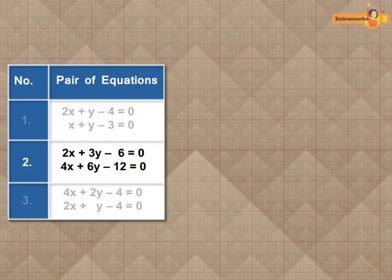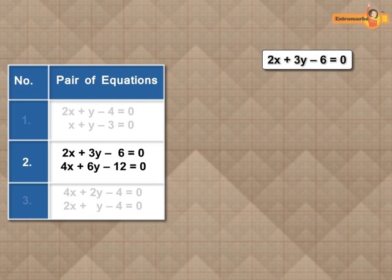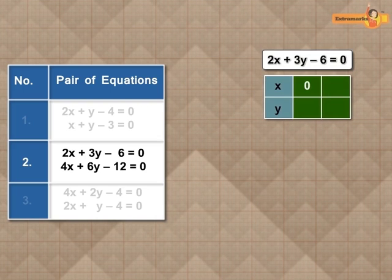Now, take the second pair of linear equations. In the first equation, 2x plus 3y minus 6 is equal to 0. If we consider x is equal to 0, then we get y is equal to 2. And if we consider y is equal to 0, then we get x is equal to 3.